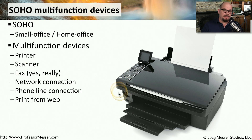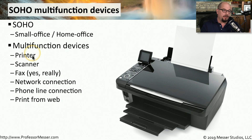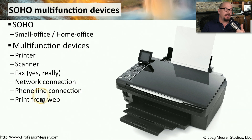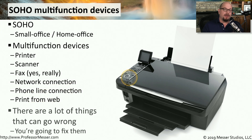A multi-function device like this one is very common in a SOHO environment. It's a single device that is a printer, a scanner, a fax machine. There's a network connection on this device, it has a phone line connection, and it can print from the web. Because this device does so many different things, there are often many things that can go wrong with it, so it's important to understand the major components of these SOHO multi-function devices.